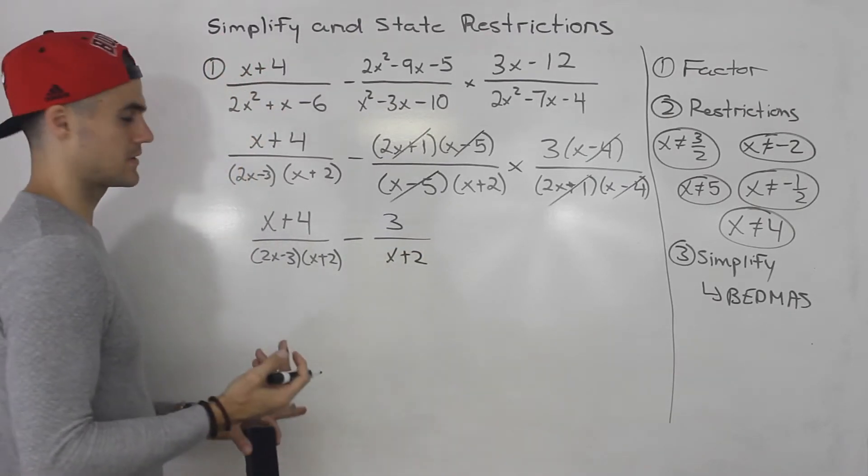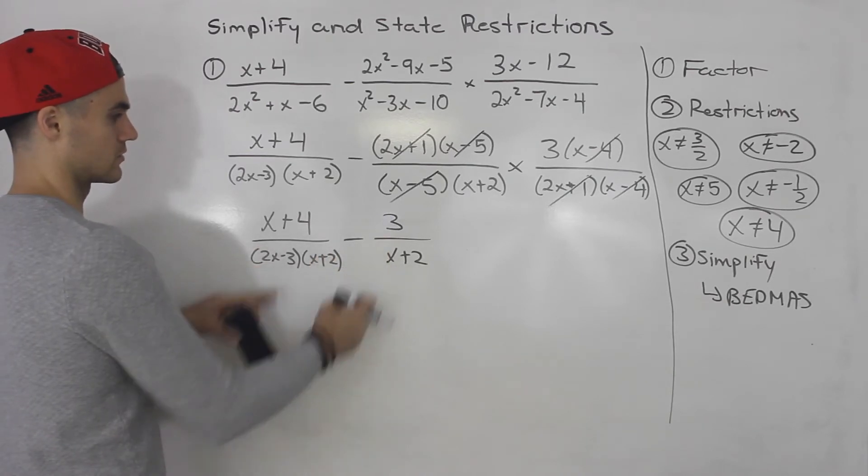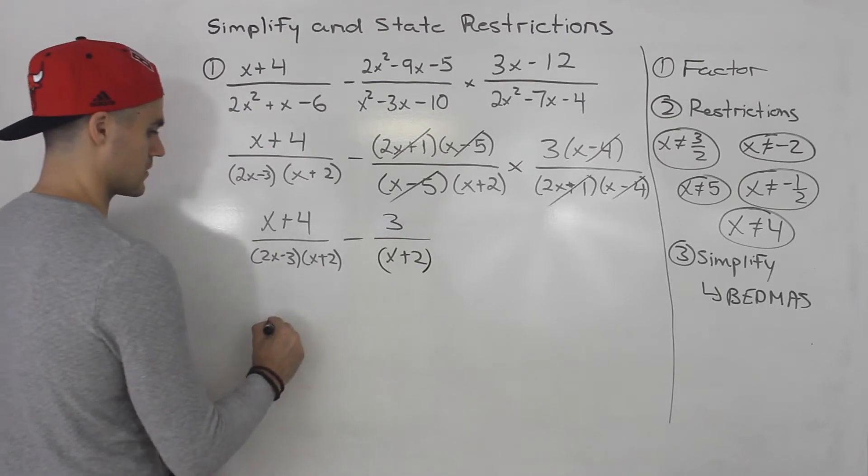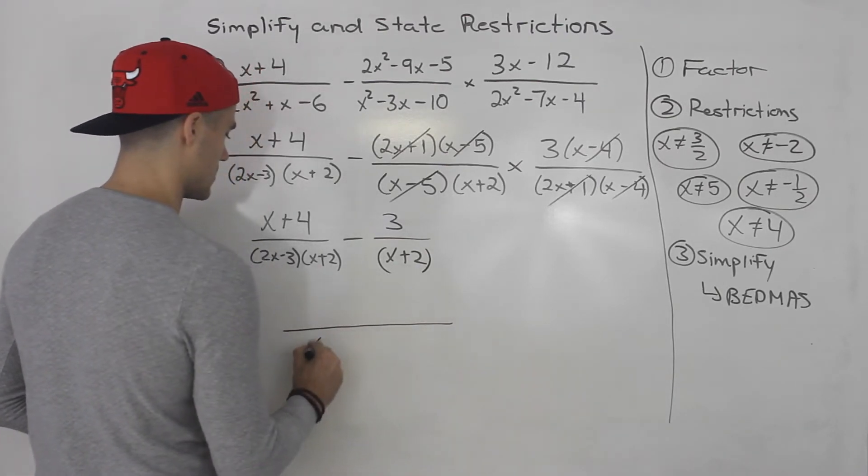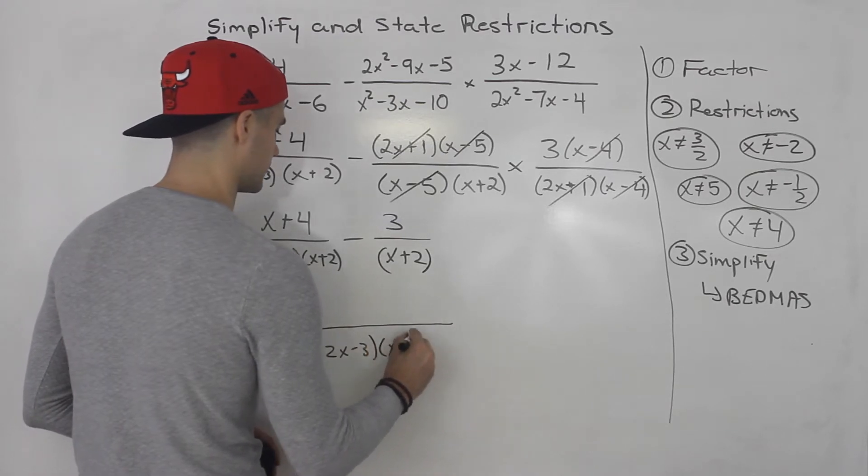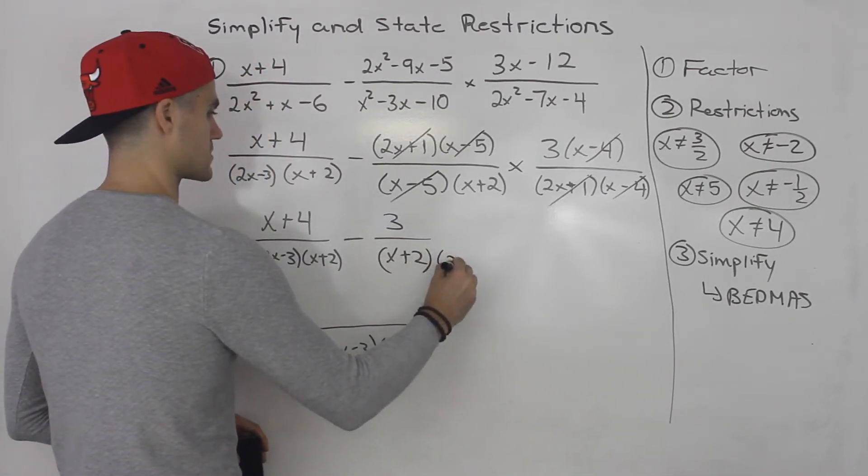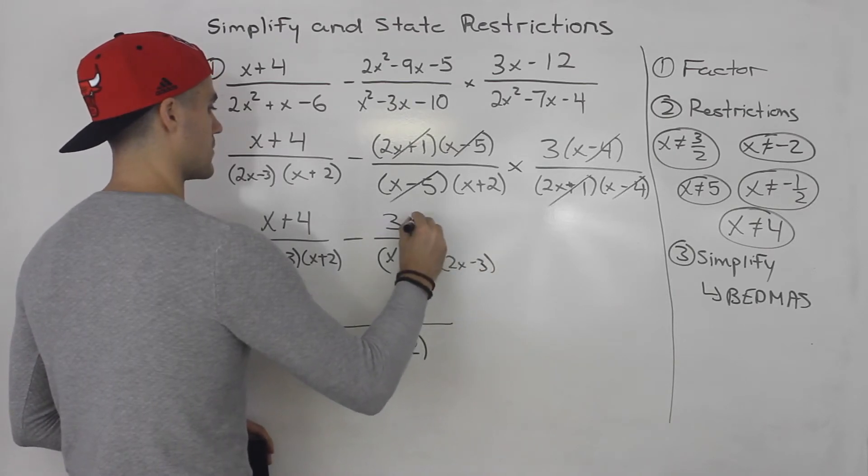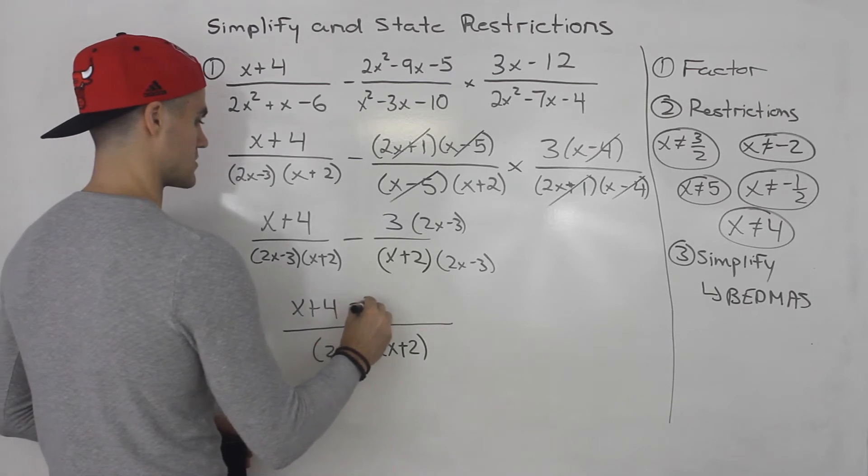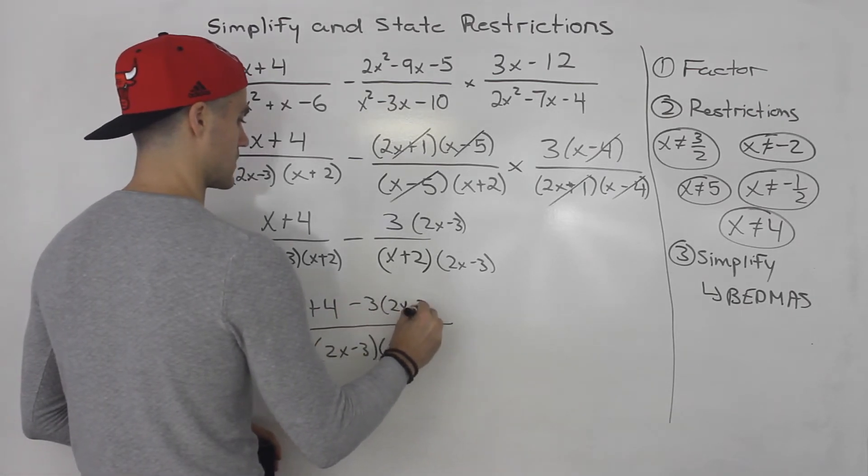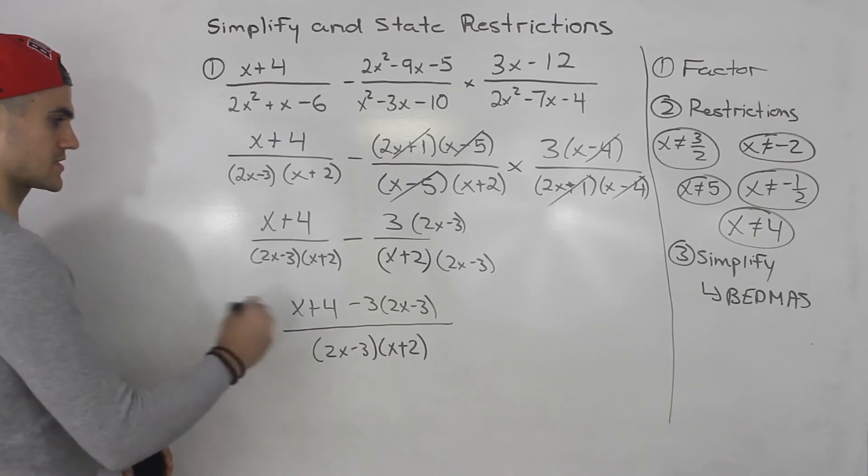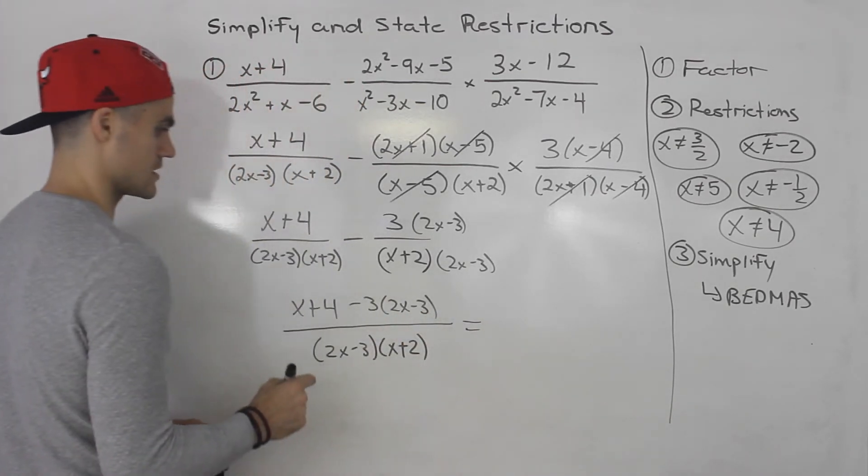And now it just becomes subtracting rational expressions. So lowest common denominator is going to be 2x minus 3, x plus 2. So you've got to multiply this by 2x minus 3, multiply the top by 2x minus 3. So we'll have x plus 4 minus 3 bracket 2x minus 3. And then you just simply simplify this.